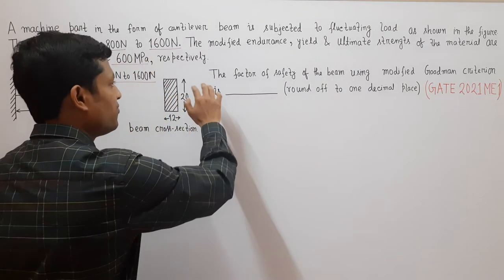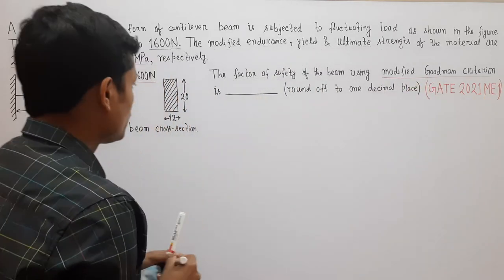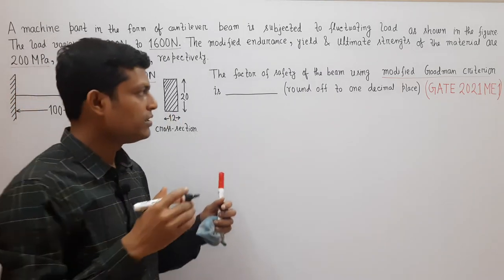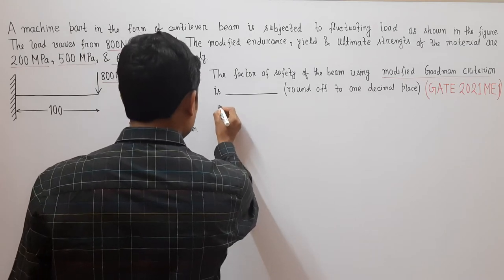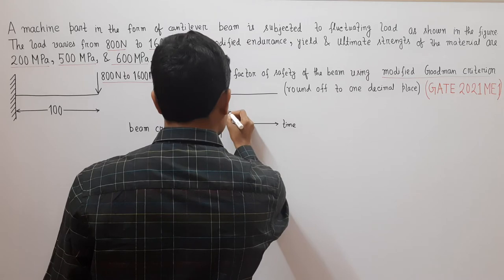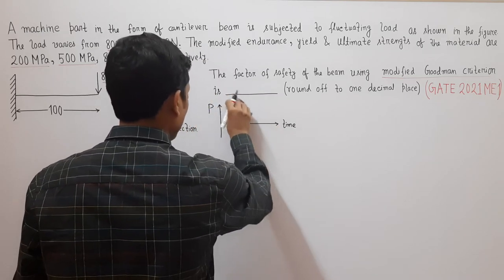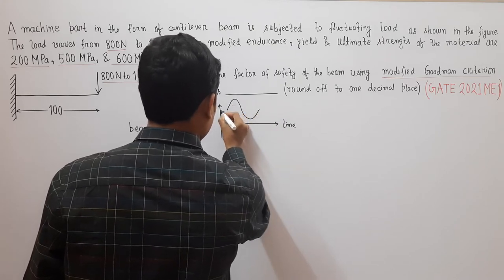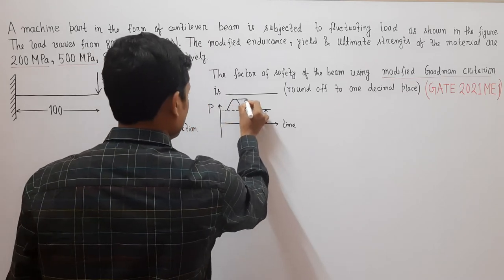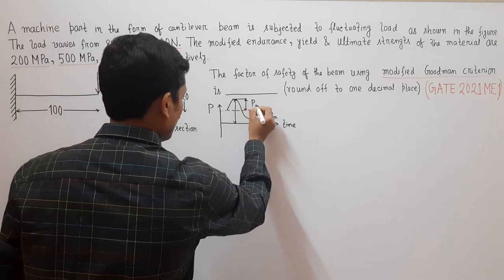The load is fluctuating, so let us learn how to design in such cases. If we plot load versus time, the load oscillates between a minimum value and a maximum value. This minimum is P_min, the maximum is P_max, and there is a mean value and a load amplitude.